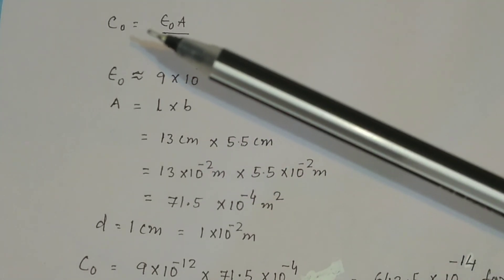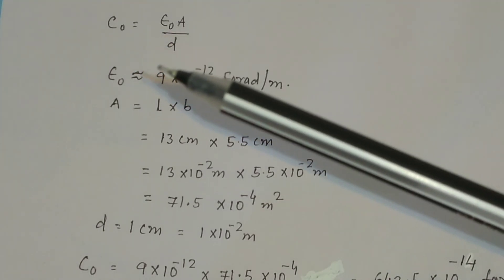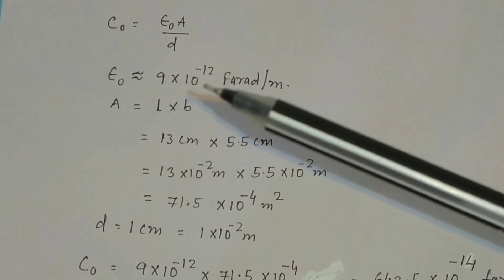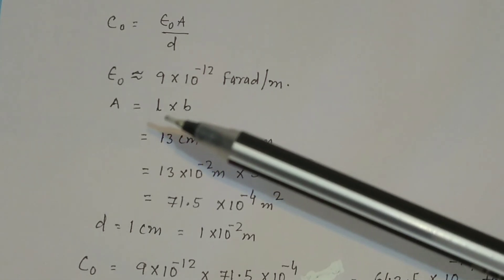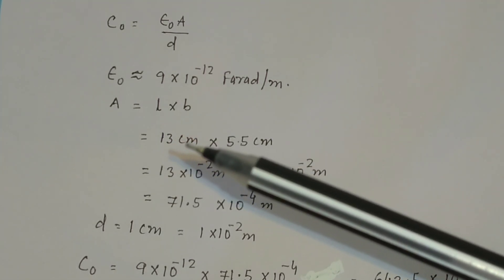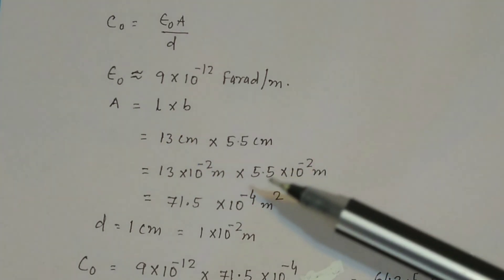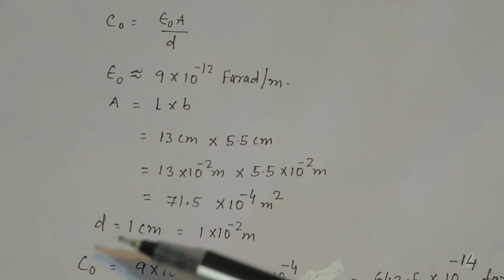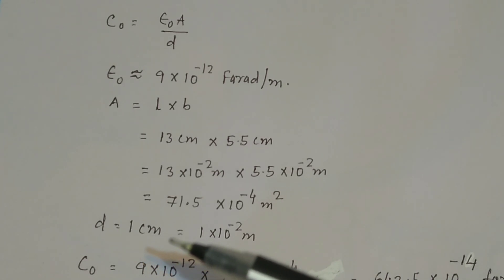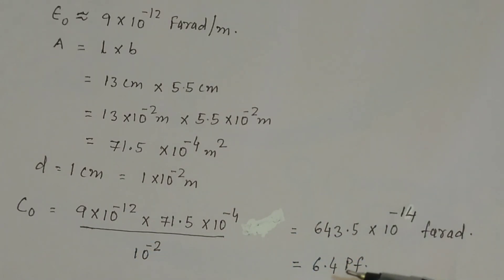The capacitance of a parallel plate capacitor is given by the formula C0 equal to epsilon-0 times A divided by d. Epsilon-0 is approximately 9 × 10⁻¹² farad per meter. A is the area of the parallel plate, equal to length times breadth. In our experiment, length is 13 centimeter and breadth is 5.5 centimeter, so the area is 71.5 × 10⁻⁴ meter squared. D is the distance between the two parallel plates; in our experiment d equals 1 centimeter, that is 10⁻² meter. Calculating C0 gives 6.4 picofarad.